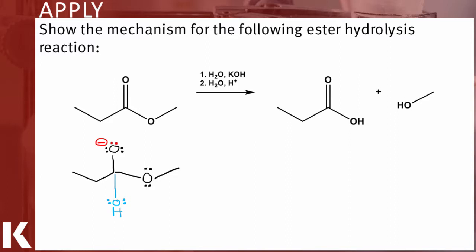Now that you've created this tetrahedral intermediate by adding a hydroxyl group, you're ready to finish step one of this hydrolysis with an elimination. Here's how it's going to work.